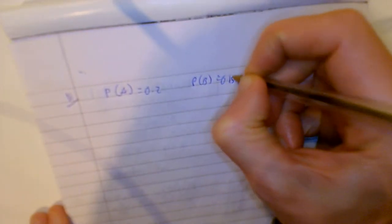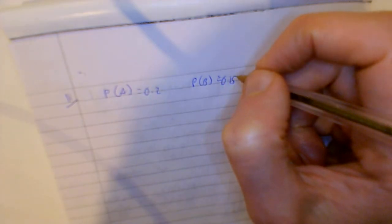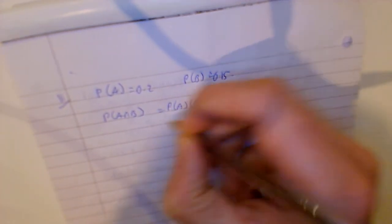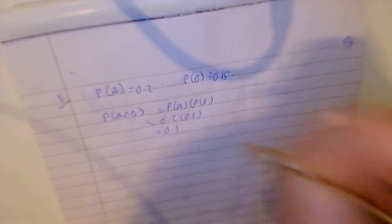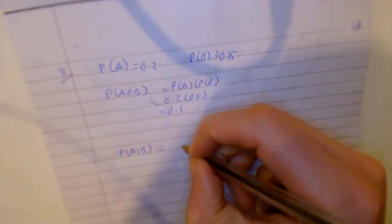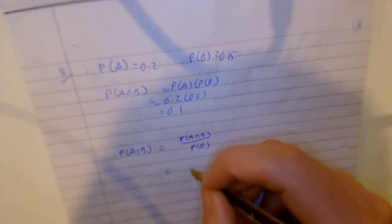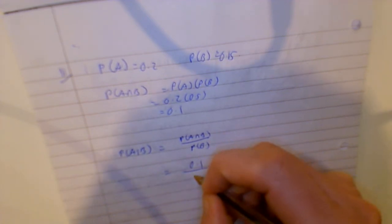Let's do question 11: probability of A is 0.2, probability of B is 0.15. If A and B are independent, then straight away P(A ∩ B) equals P(A) times P(B), which is 0.2 times 0.15 equals 0.03. The probability of A given B is P(A ∩ B) over P(B), which is 0.03 over 0.15.